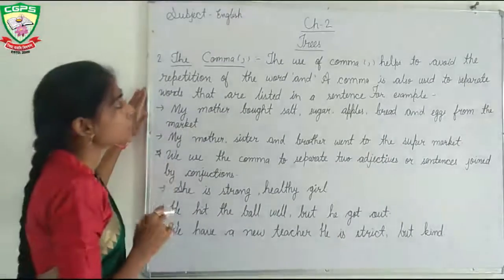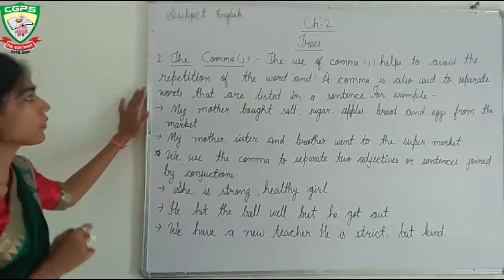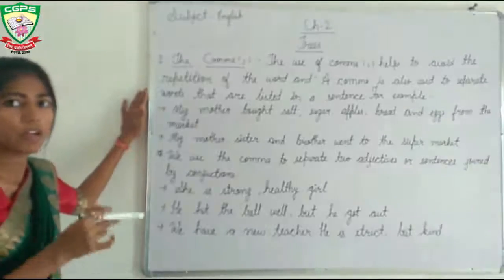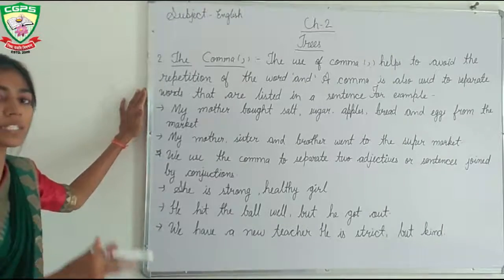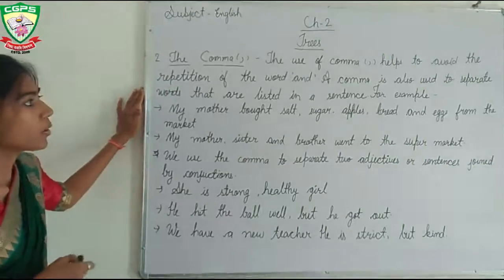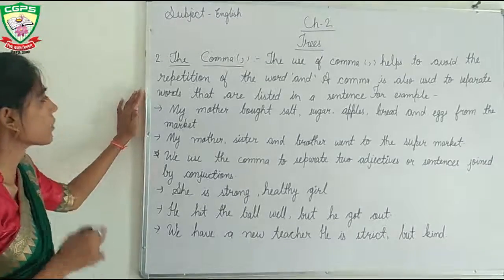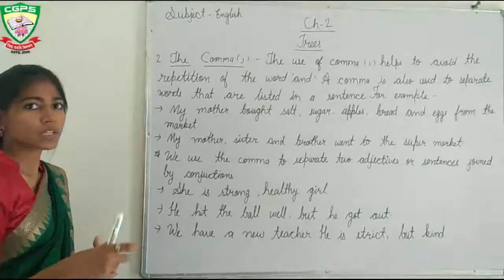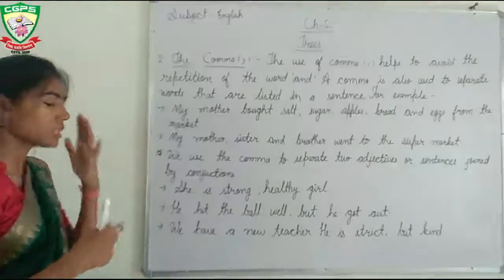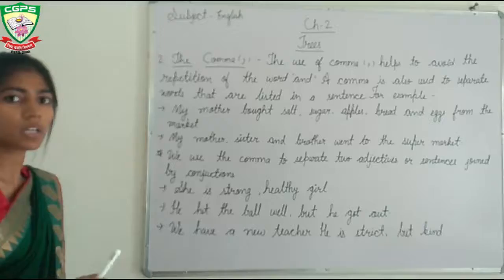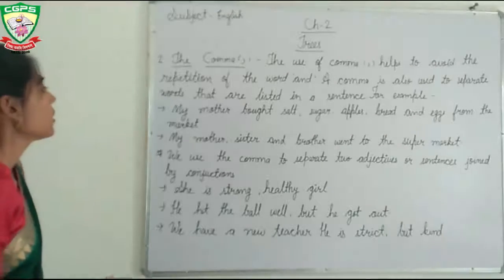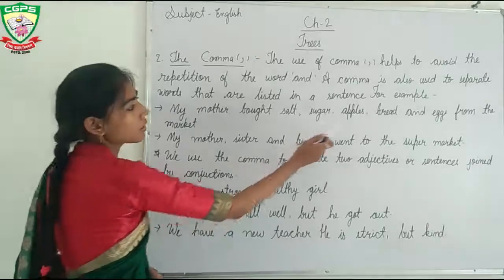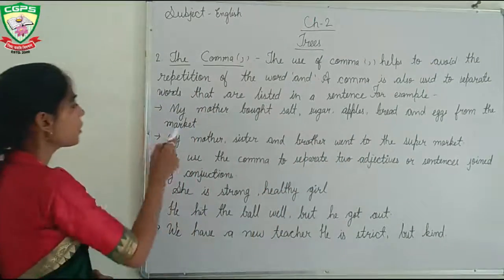The comma is used to avoid the repetition of the word 'and'. We use the comma instead of repeating the word 'and'. Comma is also used to separate words that are listed in a sentence. For example: 'My mother bought salt, sugar, apple, bread and eggs from the market.'